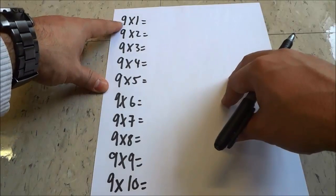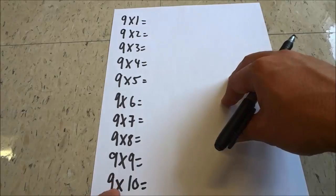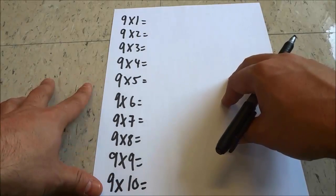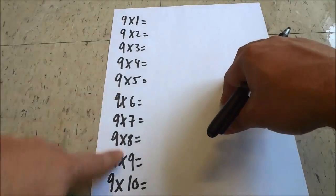As you can see I have written out nine times one, nine times two, nine times three, all the way up to nine times ten on this sheet of paper. And I'm going to show you a really easy way to determine the answers for all of these.